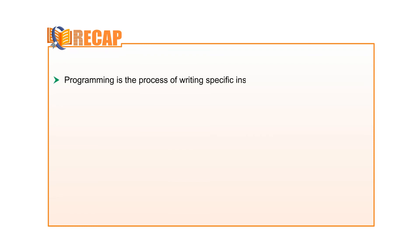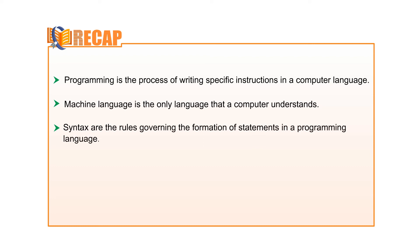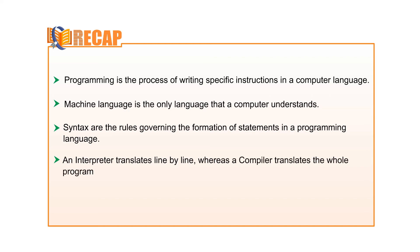Let us take a recap of this chapter. Programming is the process of writing specific instructions in a computer language. Machine language is the only language that the computer understands. Syntax are the rules governing the formation of statements in a programming language. An interpreter translates line by line, whereas a compiler translates the whole program at once. The term software was first used by John W. Tukey in 1957.